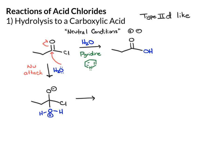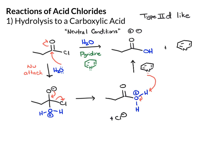From here, now we can lose our leaving group. In this case, the chlorine is actually a better leaving group than the positively charged oxygen. Then we use the pyridine as a base to take that proton off of the oxygen, giving you the carboxylic acid, plus the pyridinium ion and Cl minus, which just forms a salt that falls out of solution.